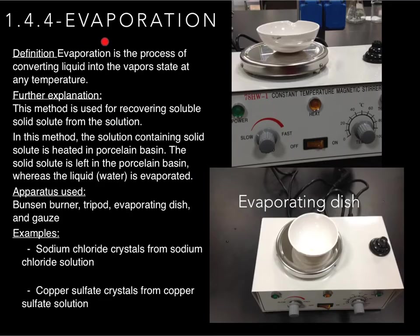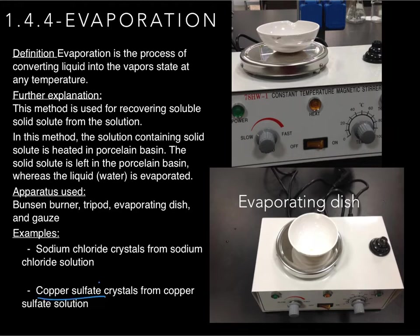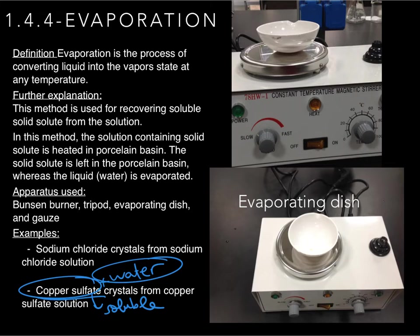Another separation technique is evaporation, which converts a liquid into the vapor state. This method is used for recovering soluble solid solutes from a solution. For example, if you have copper sulfate crystals dissolved in water — copper sulfate plus water — all you have to do is get an evaporating dish and add your solution inside it, then start heating.